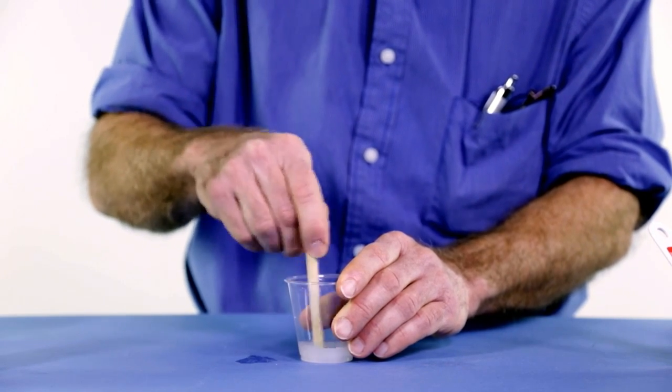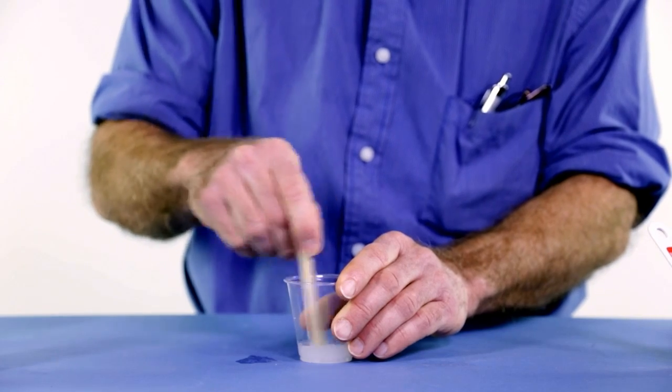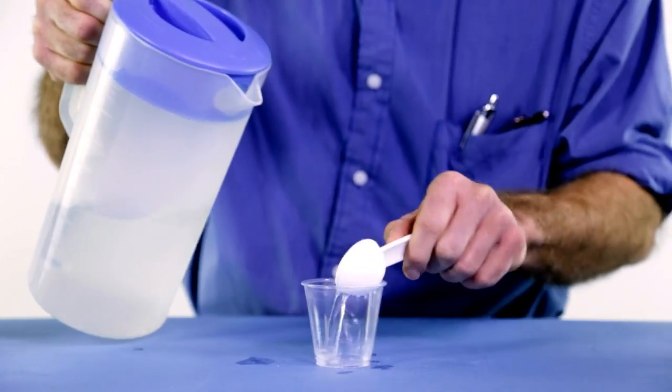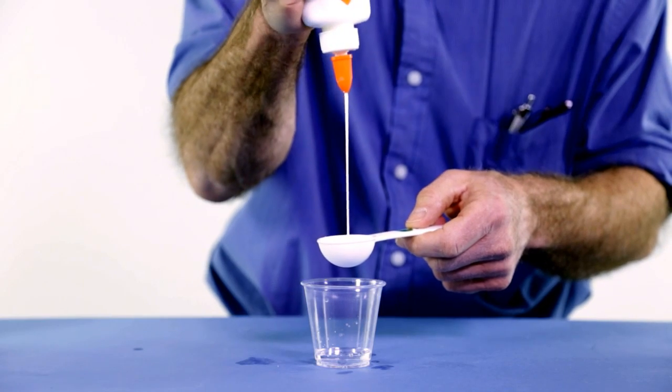So once that's done, you want to make a solution from glue. You need another tablespoon of water and a tablespoon of glue.